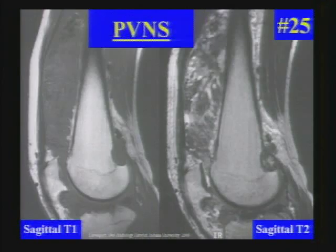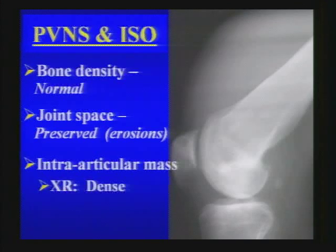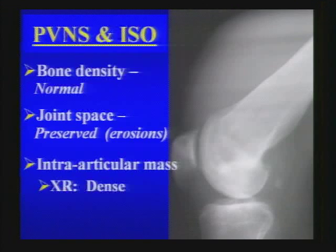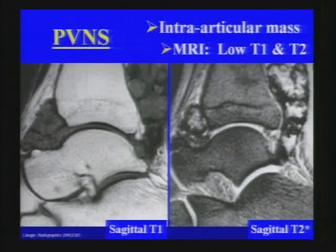Next unknown — PVNS. This is a condition in which there is proliferation of the synovium, associated with hemarthrosis and hemosiderin in the joint. Both PVNS and idiopathic synovial osteochondromatosis are conditions where bone density is commonly normal and joint space is generally preserved, though marginal erosions may be seen. There is often an intraarticular mass — here a density lesion in the suprapatellar region. It is typically a monoarticular process, most commonly affecting the knee, followed by the hip and elbow. On MR, look for an intraarticular mass that is low in signal intensity with blooming on gradient echo images.